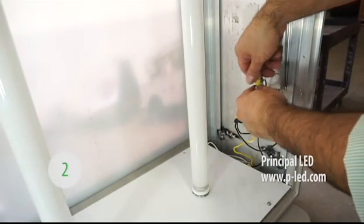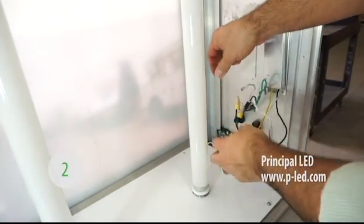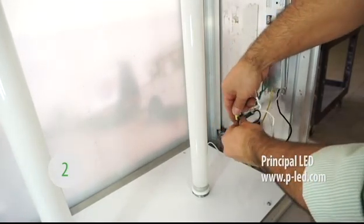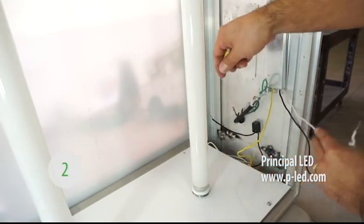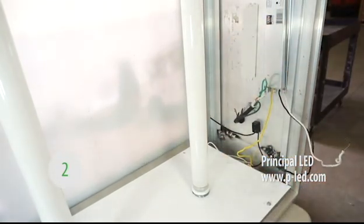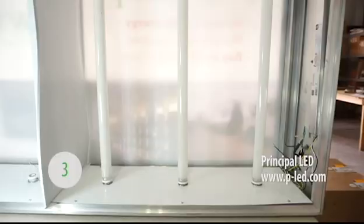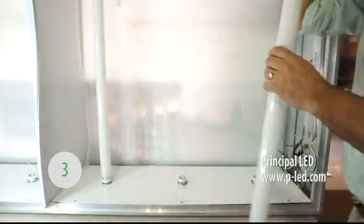Then disconnect and remove the existing ballast in the cabinet. Remove old fluorescent lamps from existing sockets.